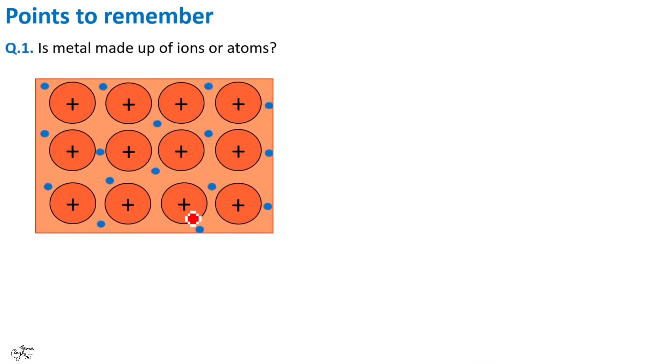Students, this electron sea model might confuse you in thinking that a metal is made up of ions and not atoms. Well, remember, a metal is made up of atoms and not ions. Although in this figure, each kernel represents an atom without its outer electron but that outer electron has not been lost. It may no longer be attached to a particular atom. It is moving like a wave. So it may no longer be attached to a particular atom but it is still present inside the crystal lattice. Therefore, we represent an atom in a metallic bond as M and not M positive. For example, sodium metal is represented as Na and not Na positive.